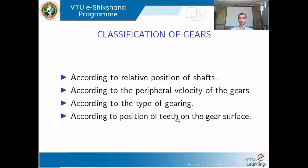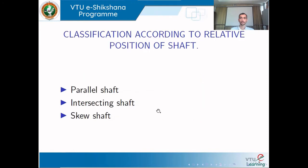According to the position of teeth on the gear surface, gears can be internal or external. Classification according to the position of the shaft: two shafts in the same plane can be either parallel, intersecting, or neither parallel nor intersecting — those are called skew shafts.